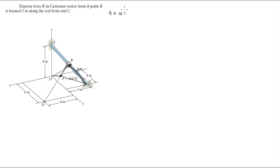A is equal to 0i plus 0j plus 4k. B is the one we're trying to find, we don't know because it sits 3 meters from C to B, that's all we know. C is equal to negative 3i plus 4j plus 0k, and D is equal to 4i plus 6j plus 0k.